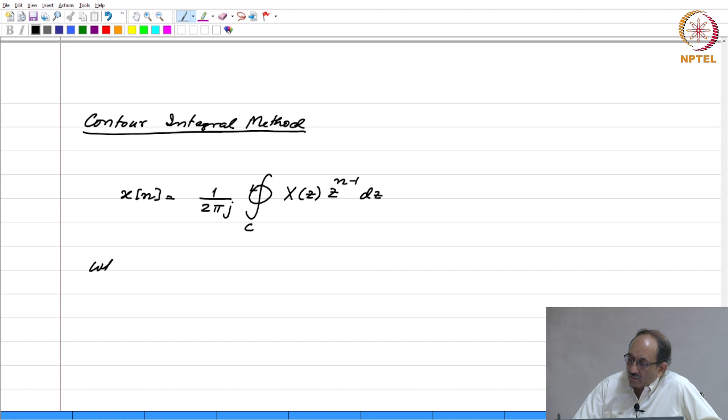Where C is a closed contour in the region of convergence.